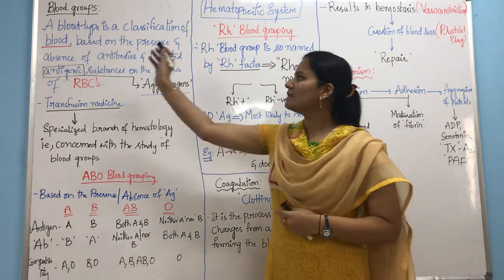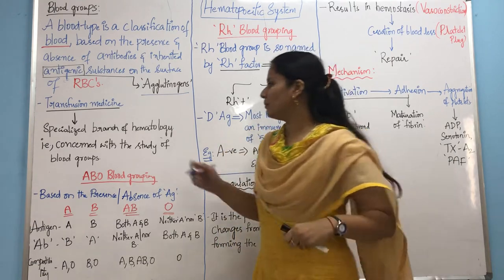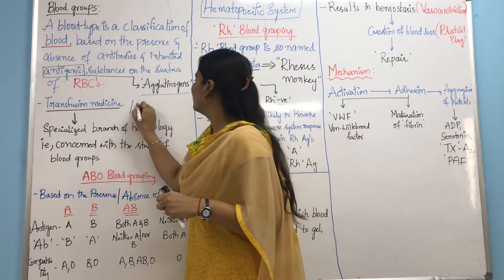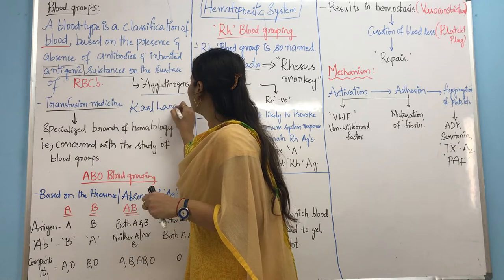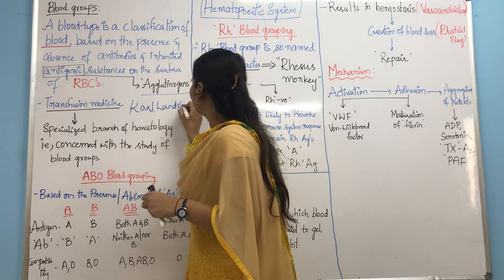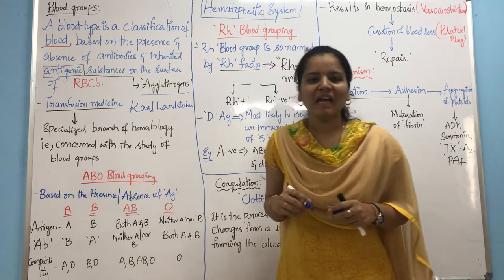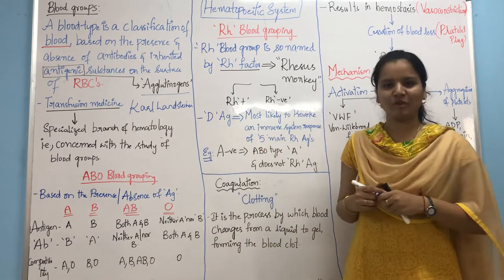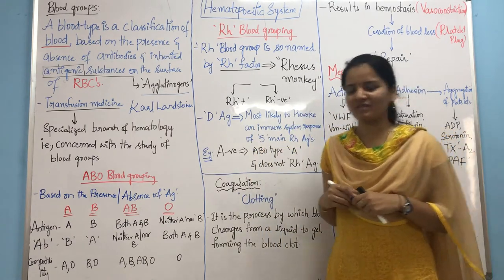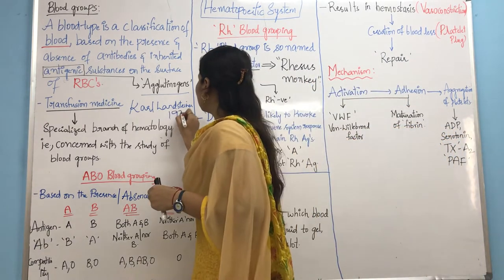These blood groups were discovered by Karl Langsteiner. Karl Langsteiner was the scientist who discovered the different types of blood groups based on staining in 1920.